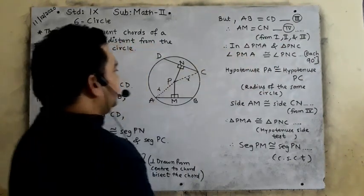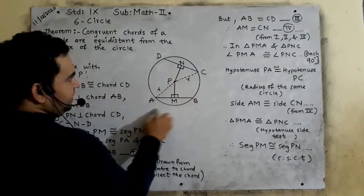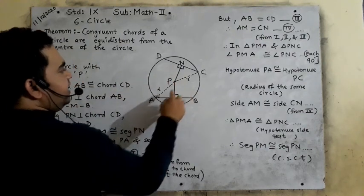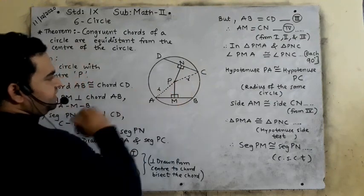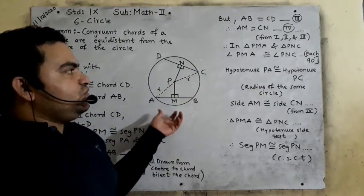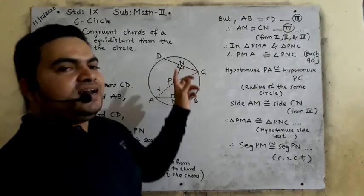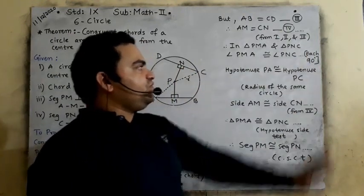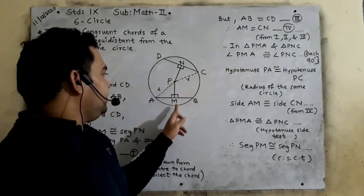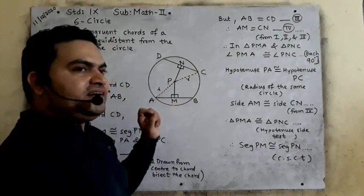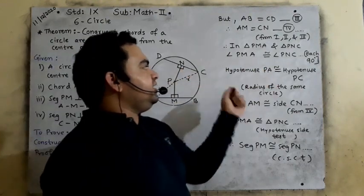In triangle PMA — this right angle triangle — and triangle PNC, we will use the fact that angle M and angle N are each 90 degrees. Angle PMA equals 90 degrees, and angle PNC equals 90 degrees.